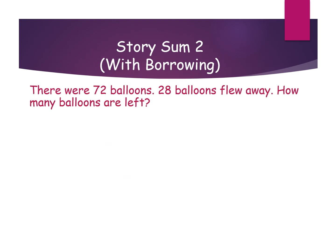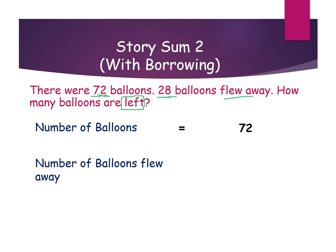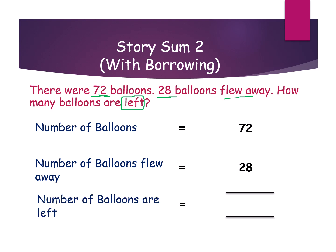Next story sum: there were 72 balloons. 28 balloons flew away. How many balloons are left? Here also we are using the keyword 'left' — left is the keyword of subtraction. Number of balloons: 72. How many flew away: 28. What they are asking: how many balloons are left? We should calculate. What is the symbol of subtraction? Minus.